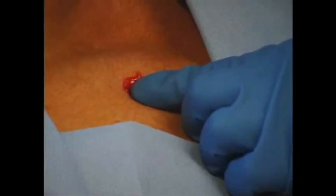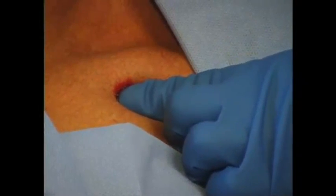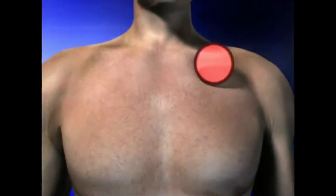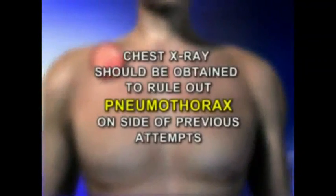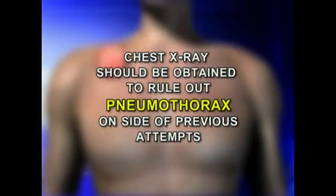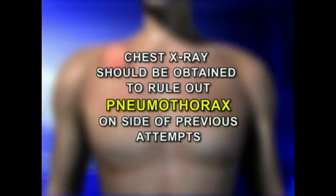In the case of arterial puncture, the needle is withdrawn and pressure is held for one to two minutes before the next attempt. If multiple attempts are unsuccessful, it is often wise to try another entry site. Before switching to another side of the chest or neck for a second attempt, a chest x-ray should be obtained to rule out a pneumothorax on the side of the previous attempt. Certain emergent conditions may preclude this.